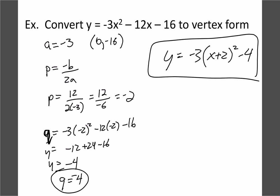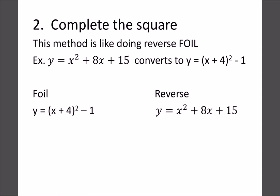So that method works pretty well — it takes a few steps and some rearranging, but it works quite nicely. Now let's figure out how to do this using completing the square. It does the exact same thing, just a different way of writing it. Completing the square is essentially backwards foiling.